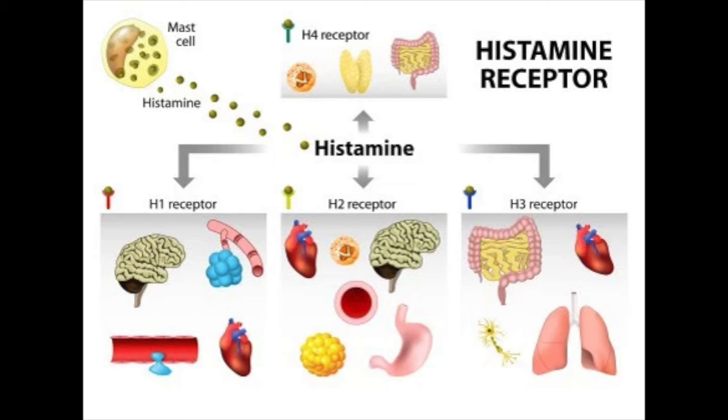Histamine is a compound found in every single cell of your body and it's a natural component of many foods. It plays an important role in the regulation of inflammation, the health and function of the immune system, and it's also involved in the neurological system. When someone has a problem with histamine, it can cause a variety of symptoms depending on where it's released and what kind of receptors that histamine is binding to.